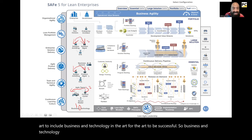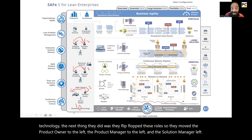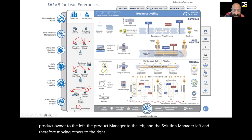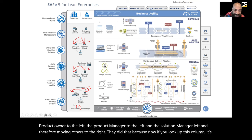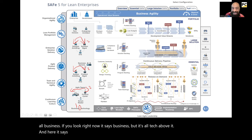First off, notice here at the bottom, this used to say 'business' and then a little vertical bar 'technology.' It now says 'business and technology.' It seems like a small change, but they're trying to talk about how important it is for the ART to include business and technology in the ART for it to be successful. The next thing they did was they flip-flopped these roles — they moved the product owner to the left, the product manager to the left, and the solution manager left, therefore moving the others to the right. They did that because now if you look up this column, it's all business.